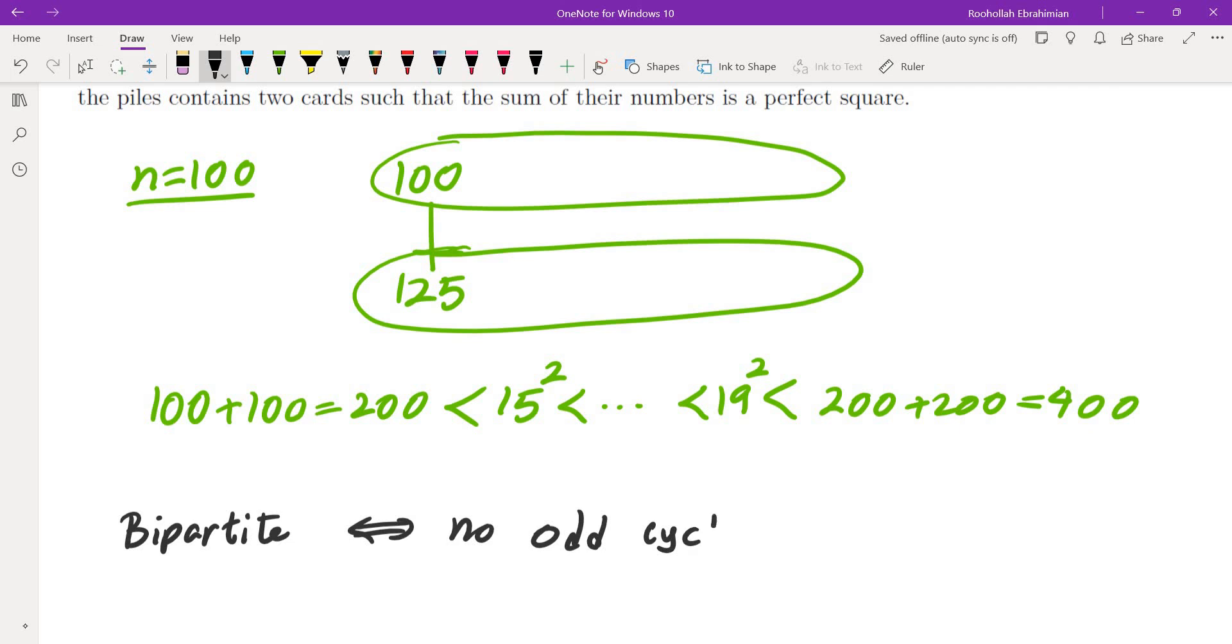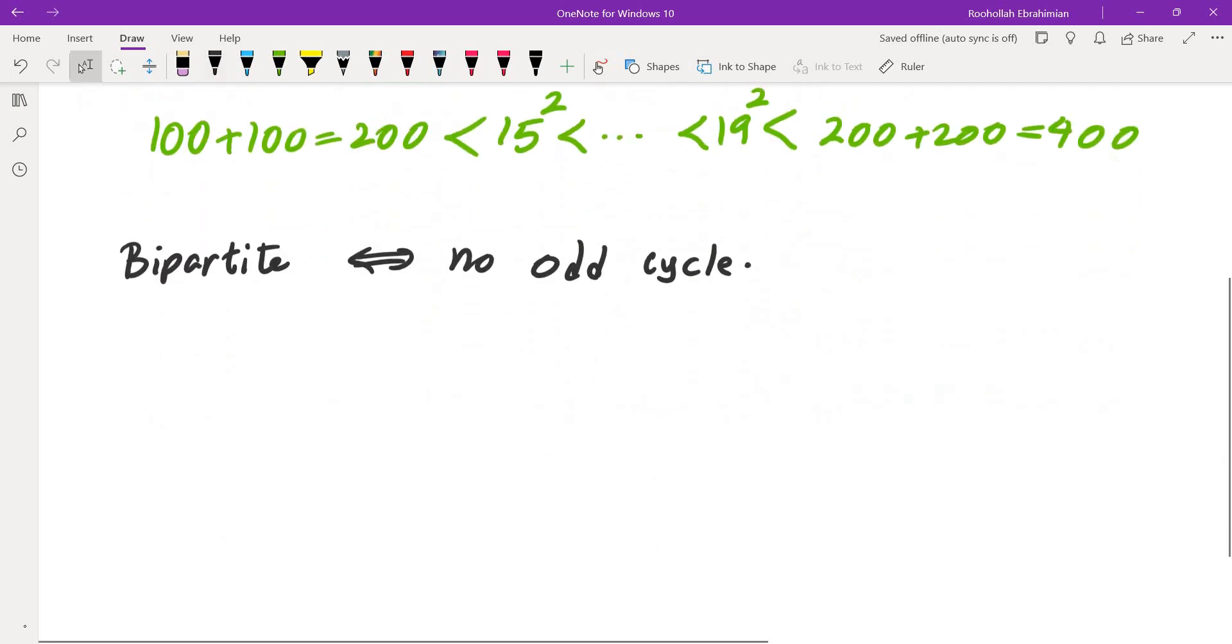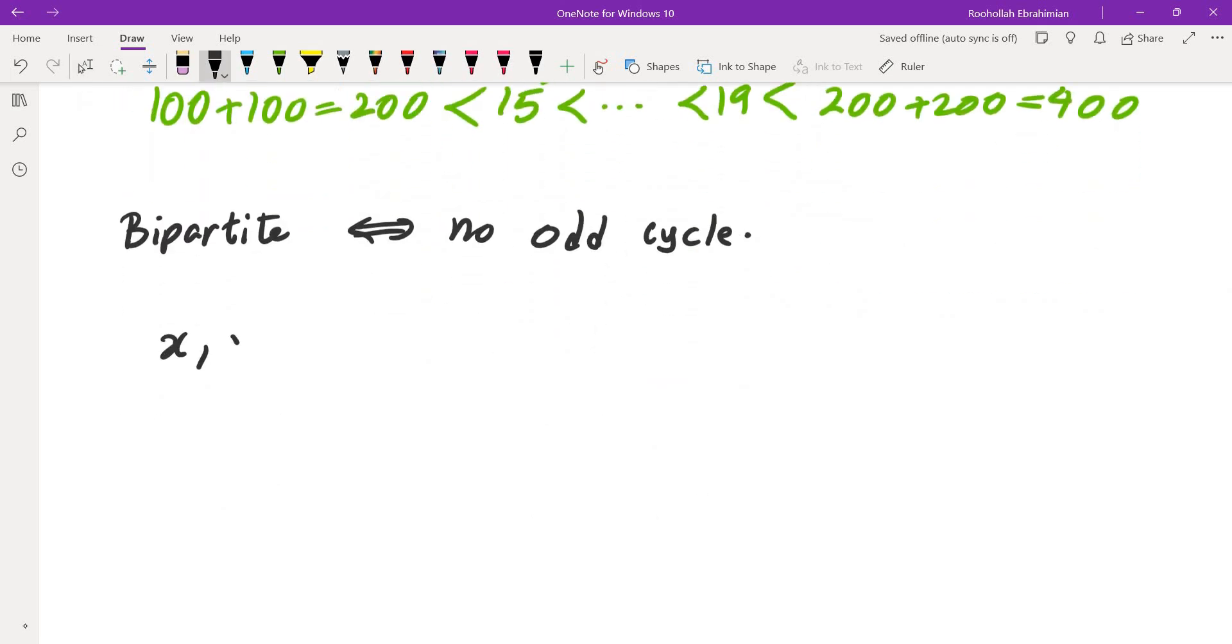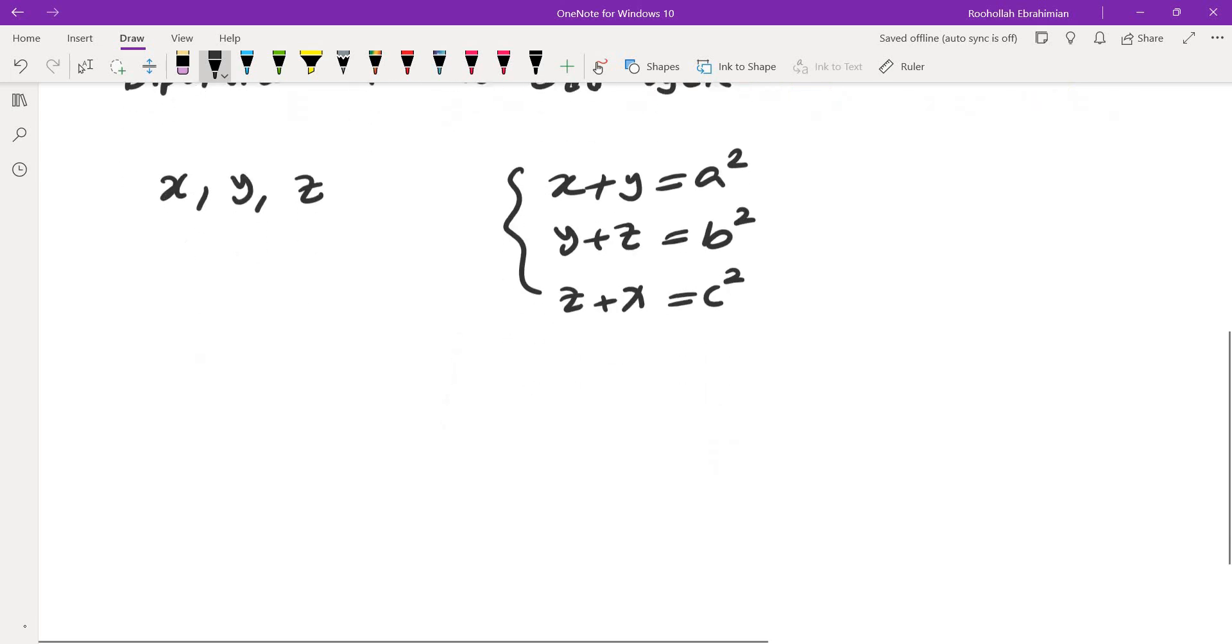So for example, if you have 3 numbers, let's say you have 3 numbers, x, y, and z. x plus y is a perfect square, y plus z is a perfect square, and z plus x is also a perfect square. If you have a situation like this, then that would lead to a proof. The reason is 2 of these 3 are going to be in the same pile, and that would give us the sum of 2 of them is a perfect square. So then I thought, can I find an example for 100?